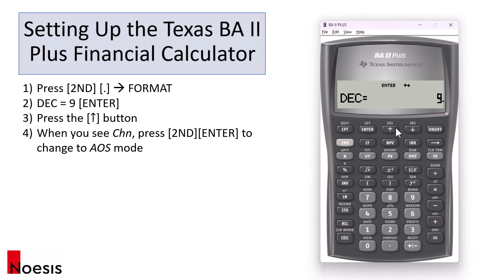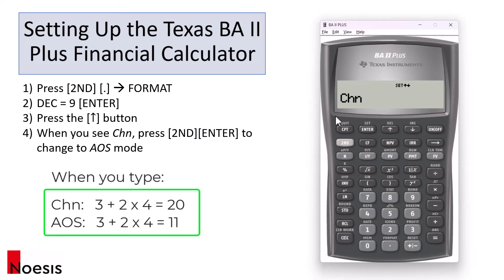Once you click up, you will see CHN. This is chain mode, so I would recommend the AOS mode. Press second enter — so that's AOS. And once you're done, you can just press ESC. That gets you back to the main screen.